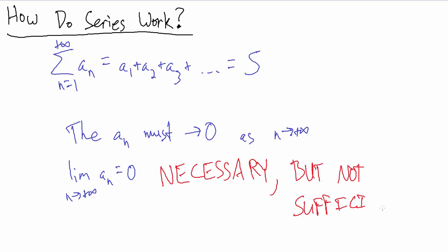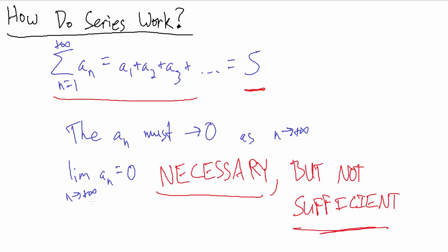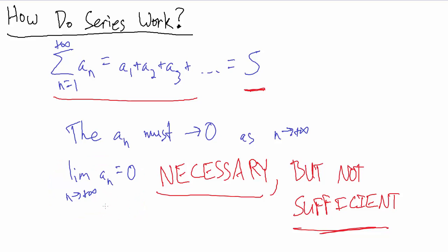So what does that mean? Well, in order for this series to actually converge and equal a finite value, it is necessary that this limit be true. However, it's not enough — it's not sufficient. It's not enough to just have this. The extra part we need is that not only does this limit have to be 0, but a sub n must go to 0 quickly enough.